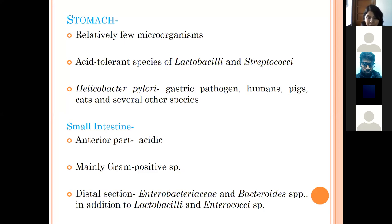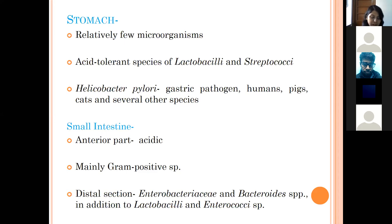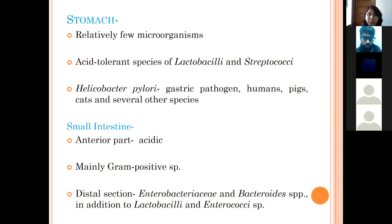The small intestine can be divided into the anterior part and the distal part. The anterior part has an acidic environment, so its bacterial composition is similar to the stomach, with mainly Gram-positive bacteria. In the distal section, the pH is less acidic, causing a change in microflora — resulting in a richer, more complex bacterial community. Bacteria in the distal section include Enterobacteriaceae like Escherichia coli, anaerobic Gram-negative bacteria like Bacteroides, and others.